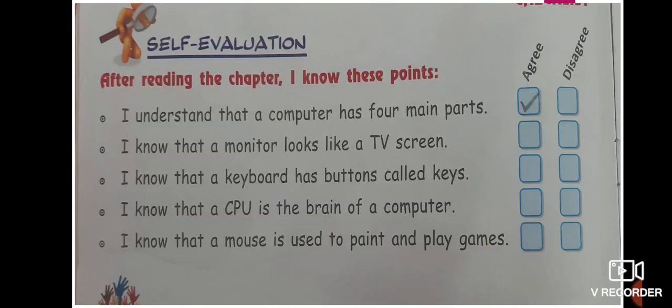Let's start on page number 28 with the book exercise for Lesson Number 3. First is Self Evaluation, which you have to do by yourself. There are some statements written, and after each statement you can see two boxes — one is for Agree and the other is for Disagree. You have to read the statement and tick one of the boxes.